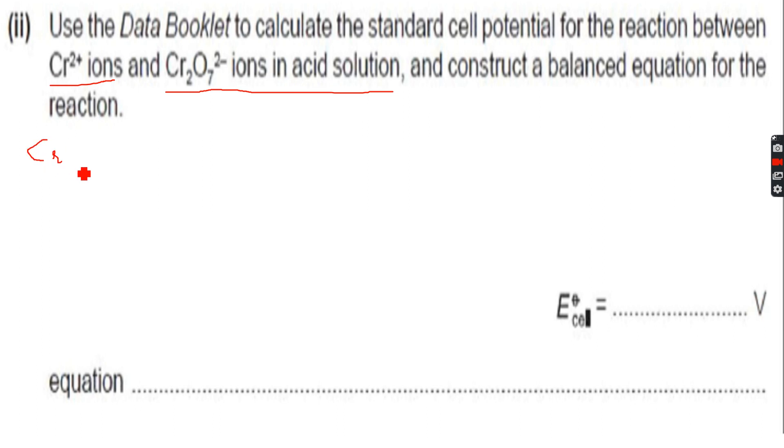Yes, the acid solution is very important because the half equation given in the data booklet is: Cr₂O₇²⁻ + 14H⁺ + 6e⁻ → 2Cr³⁺ + 7H₂O. So this is the half equation for the Cr₂O₇²⁻ ions.